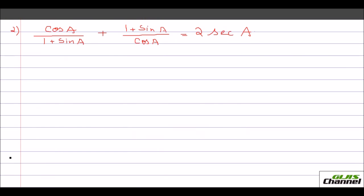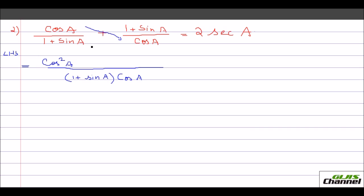The second problem: cos a over (1 plus sin a) plus (1 plus sin a) over cos a equals 2 sec a. Let's start with the left hand side. I can't simplify cos a and sin a further, so I just find the LCM, which is (1 plus sin a) times cos a. You cross multiply — cos a times cos a gives cos squared a, and then (1 plus sin a) whole squared.